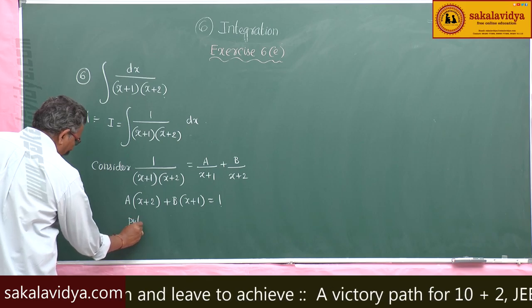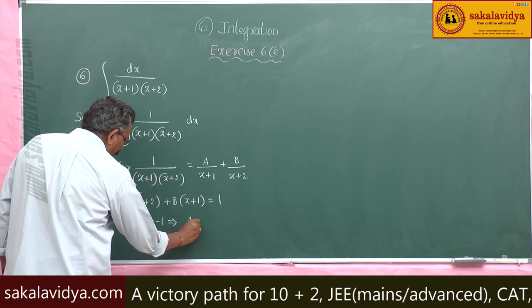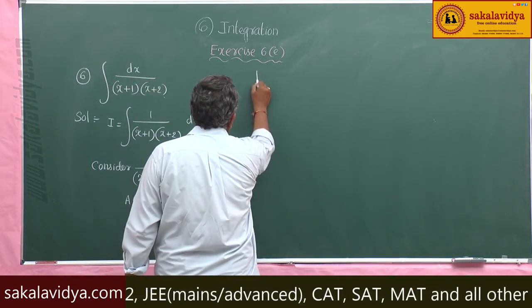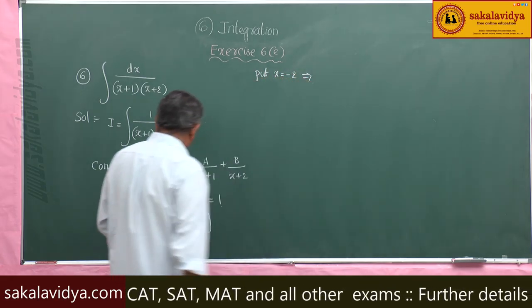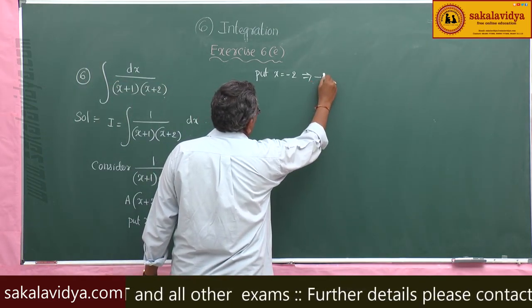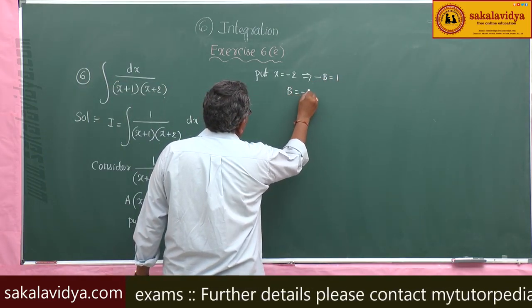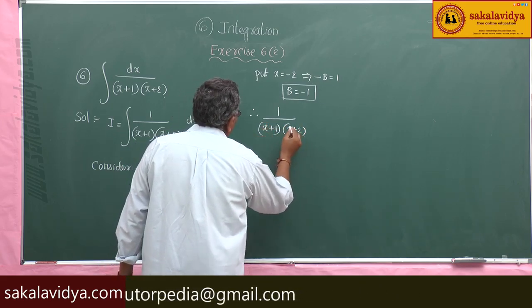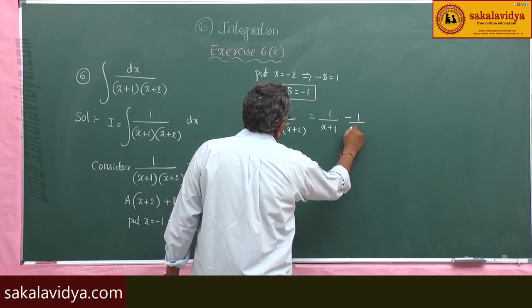Put x equals minus 1, we get A equals 1. Put x equals minus 2, we get minus B equals minus 1, so B equals minus 1. Therefore, 1 by (x+1)(x+2) equals 1 by (x+1) minus 1 by (x+2). These are the partial fractions.